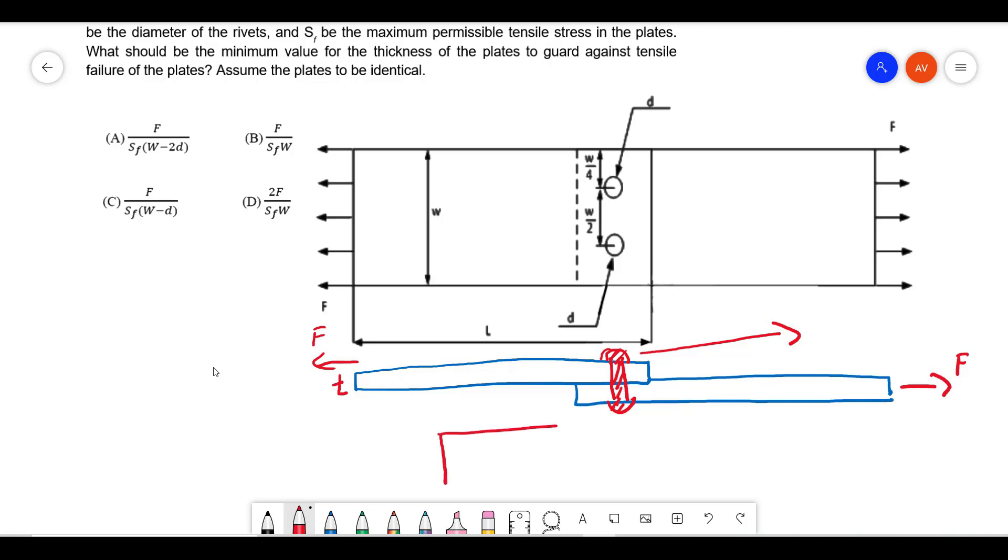Now assume that you are having some plate like this. When it is under some load, if you look carefully, this is the material cross-section which will resist the force. Now if you look at this joint, what is the material cross-section that will resist the force? You can see that at the joint, whatever I am highlighting with blue, that is the material that resists the applied force.